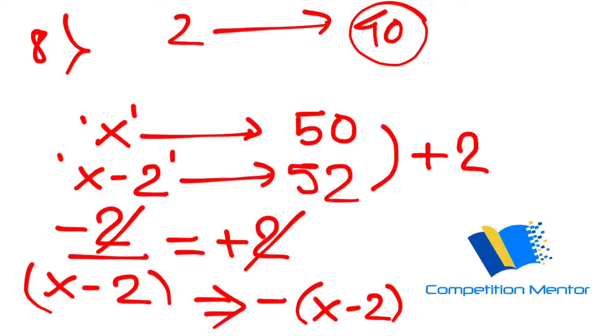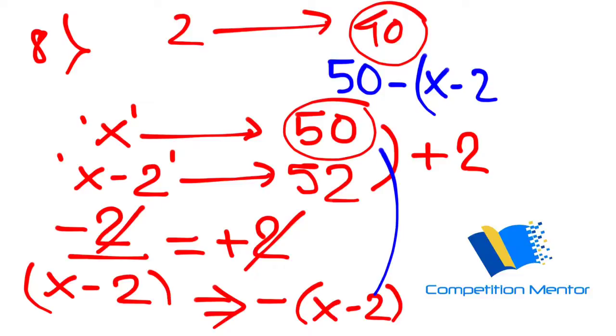so as you know, when you add this with this one, like 50 plus... So here it's already given minus (x minus 2), that's the average age of the 2 people, which is given 40. So when you solve